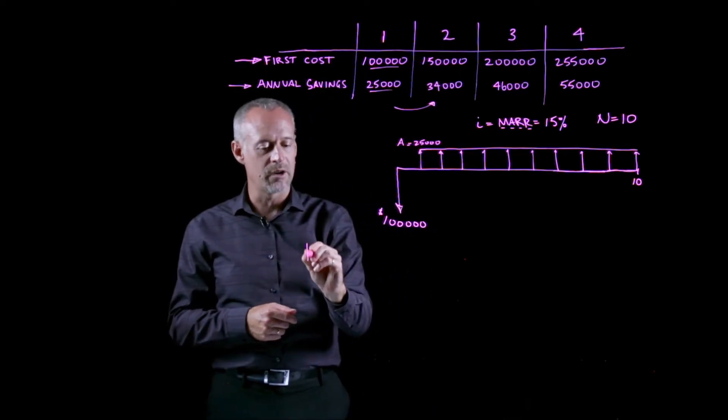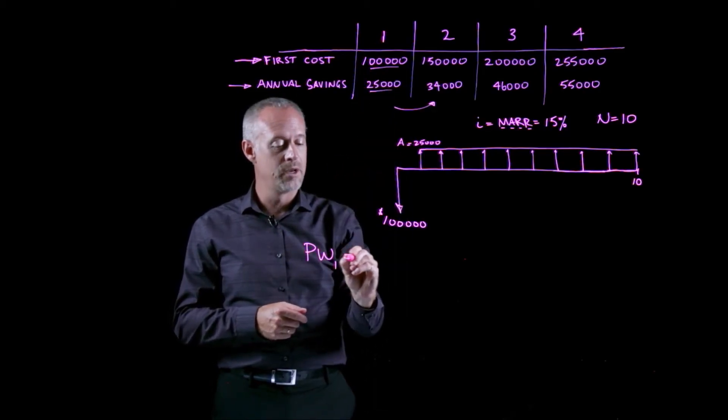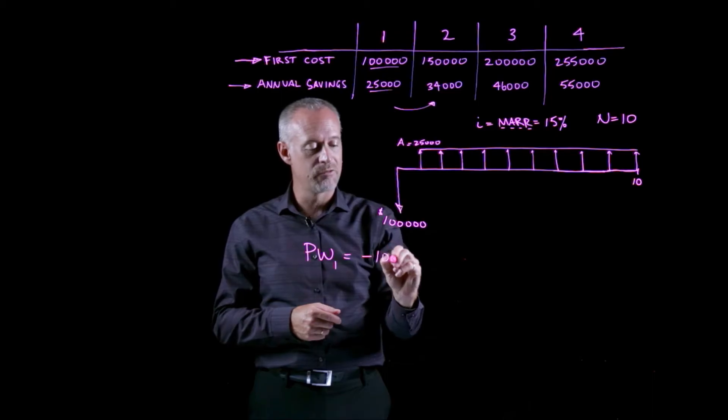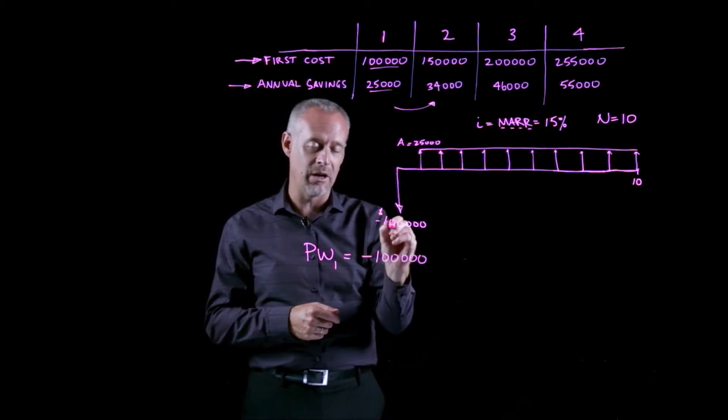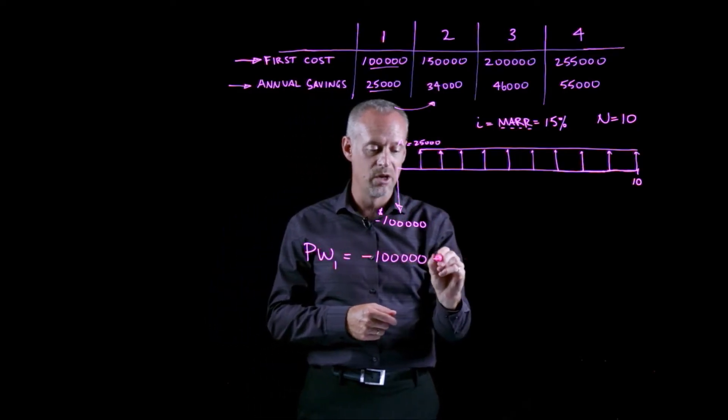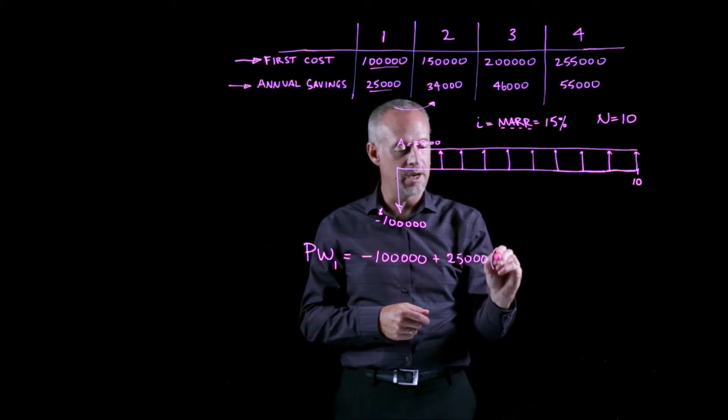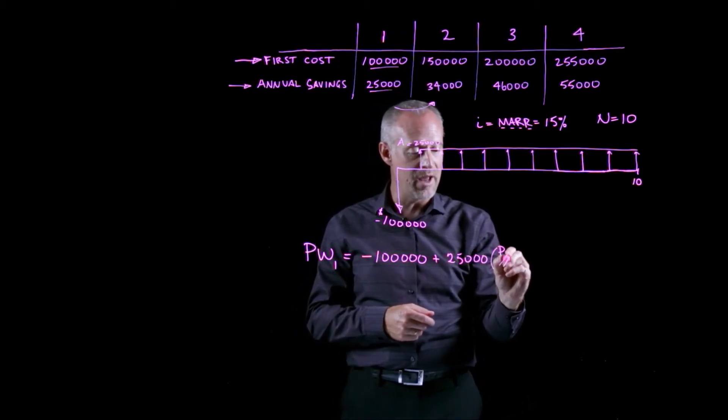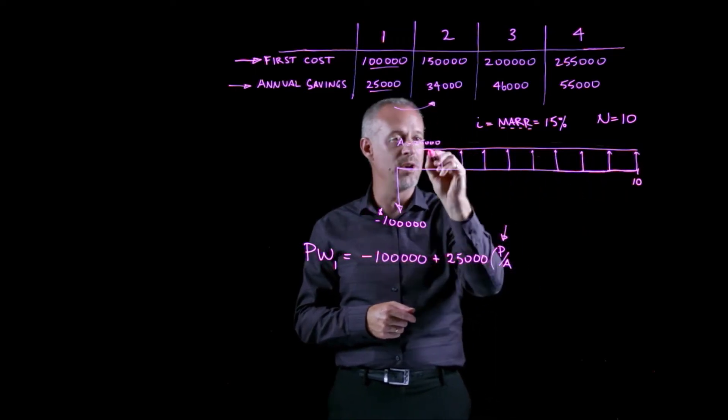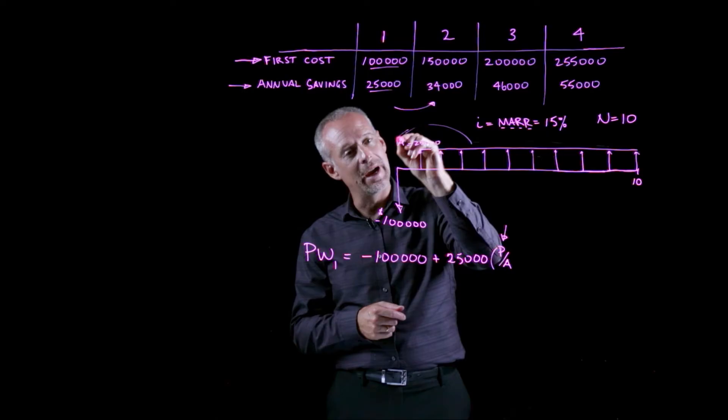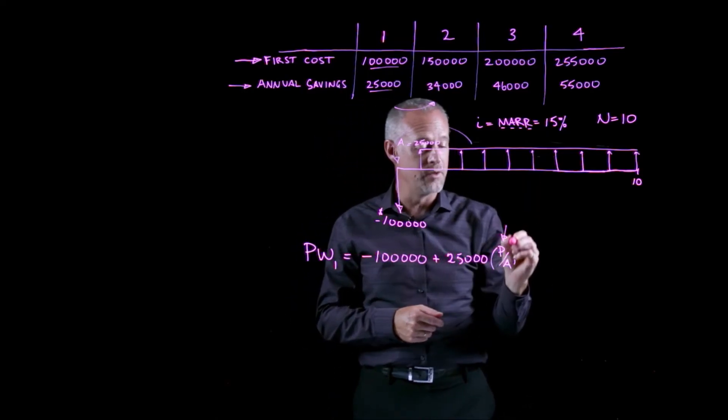So very simply, I can write the present worth of alternative one as being equal to negative $100,000, because this is a down arrow and investment is negative, plus a benefit of $25,000 times the P given A factor, because what I'm doing is I'm taking an A, an annuity, and bringing it back to the present.